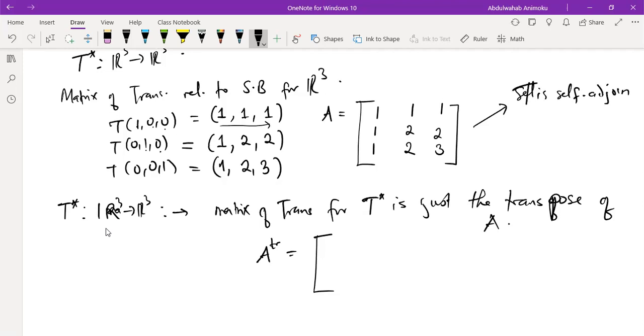And why is this the case? Because A is symmetric, which means the matrix of T and the matrix of T star relative to standard basis will be the same. So when we find the transpose of this, transpose basically means we'll write the column as a row vector.